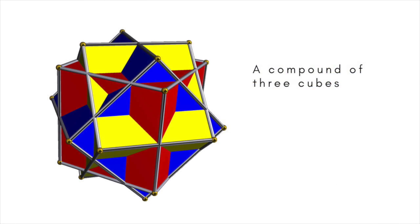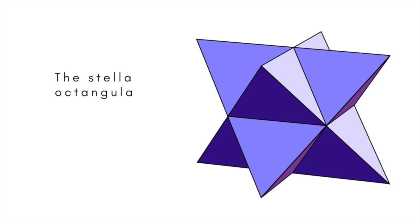A compound polyhedron is an assemblage of two or more polyhedrons, usually interpenetrating and having a common centre. There are two types: a combination of a solid with its dual, and an interpenetrating set of several copies of the same polyhedron. The simplest example is the compound of two tetrahedrons known as the stellar octangular, first described by Johann Kepler.